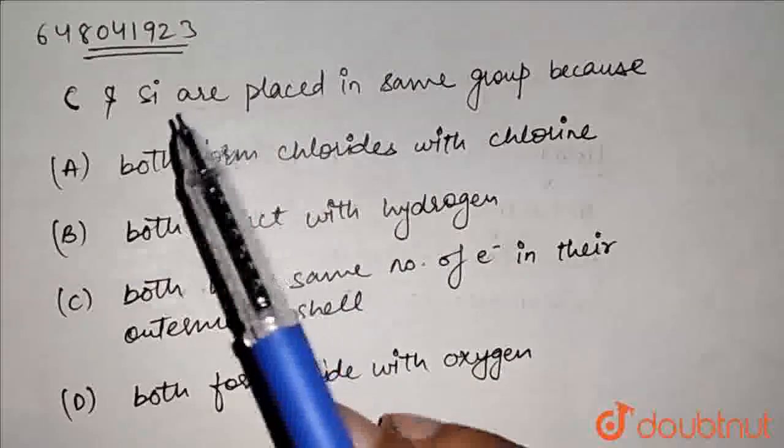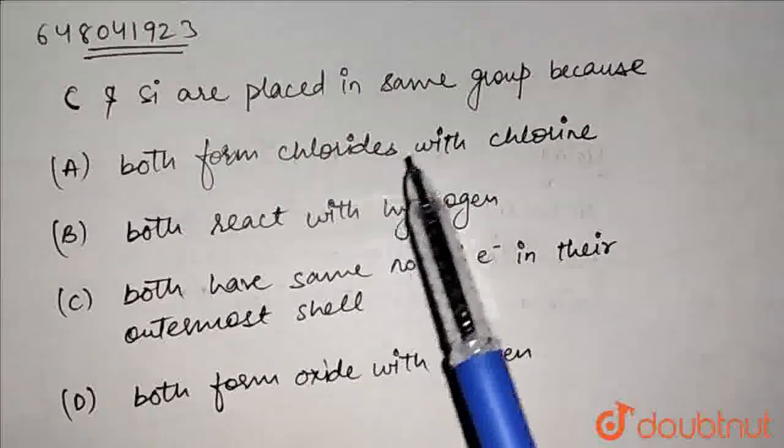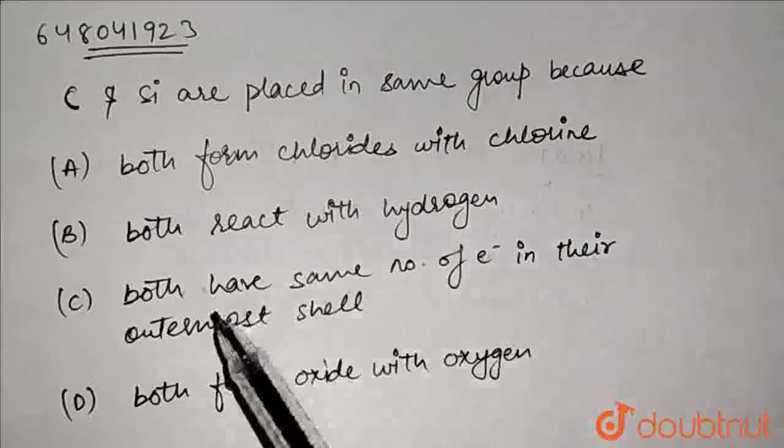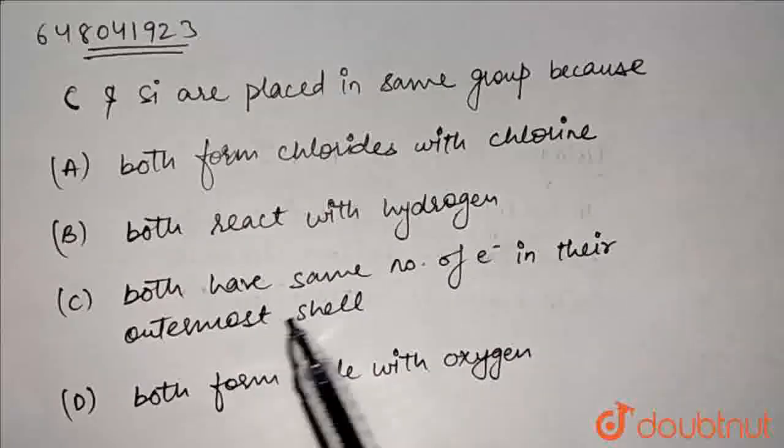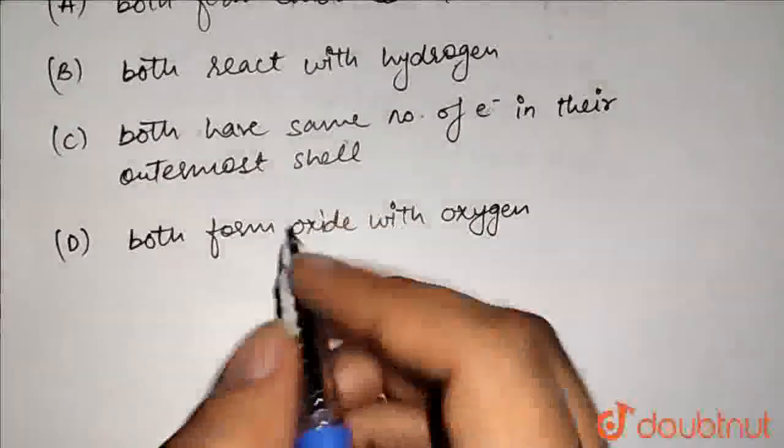Question is, carbon and silicon are placed in the same group because: Option A, both form chlorides with chlorine. Option B, both react with hydrogen. Option C, both have the same number of electrons in their outermost shell. And option D, both form oxide with oxygen.